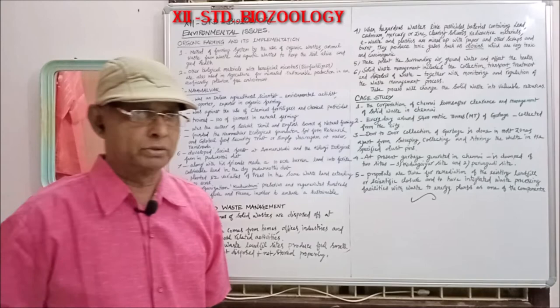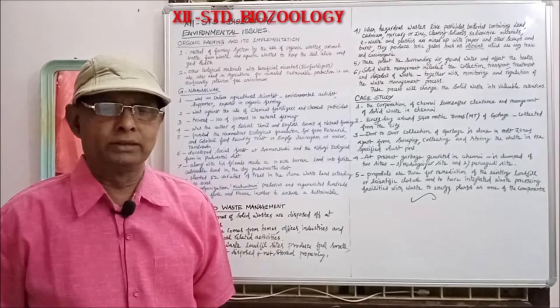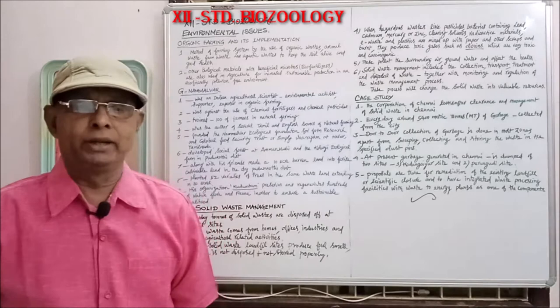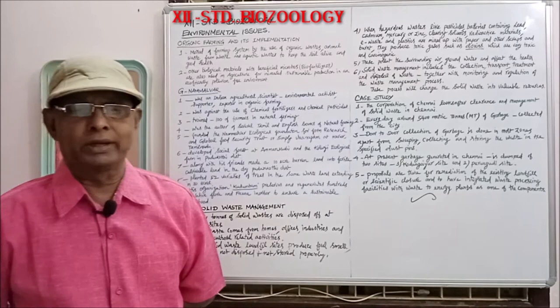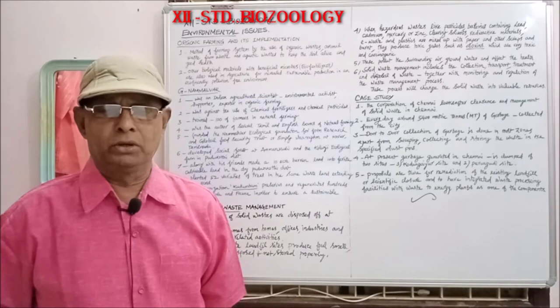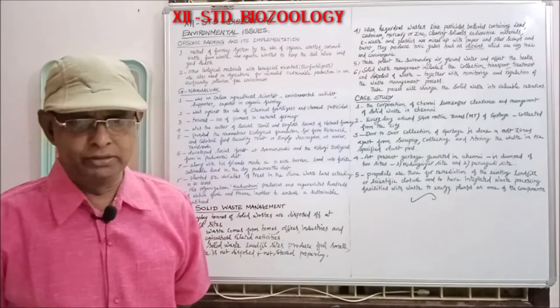Dioxins are a very toxic gas that will cause cancer. These pollute the surrounding air and groundwater and can seriously affect the health of humans. Solid waste management includes the collection, transport, treatment and disposal of waste, together with monitoring and regulation of the waste management process. These processes collectively change solid waste into valuable resources.